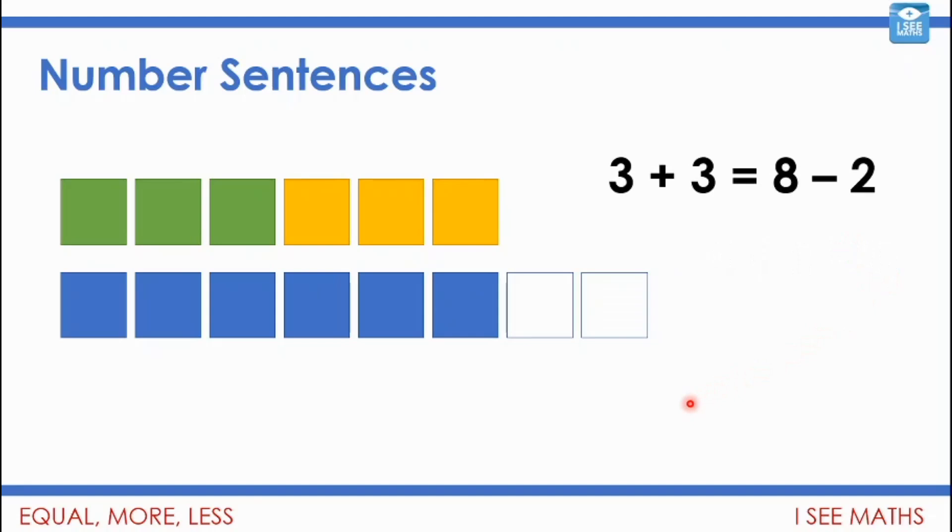But if we did 3 plus 3 and then we had 8 subtract 2, so we took away these 2, then it is an equal sign because that is the same. Because this is 3 plus 3 and then this was 8 and I subtracted those 2, and look they're the same because both are 6.